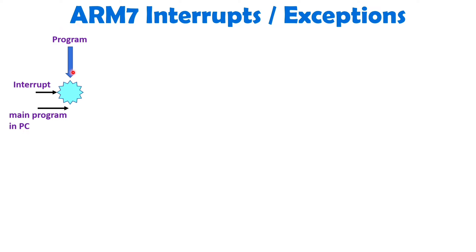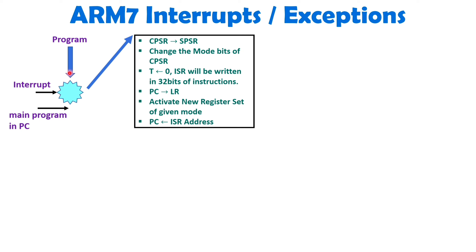Now with this main program, there are a few more things you should know. This main program has a status with respect to the flag register, and that is referred to as CPSR — the Current Program Status Register. That CPSR of this main program should not change. So before you give service to this interrupt, you should load that CPSR somewhere. Now I'll explain how service to this interrupt is happening and how many steps are happening before ISR execution.